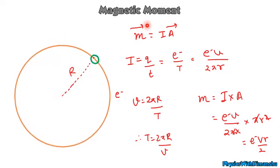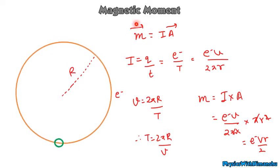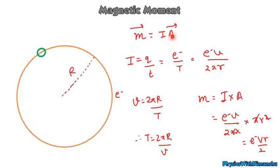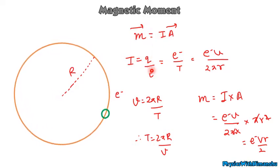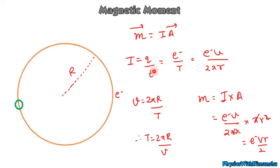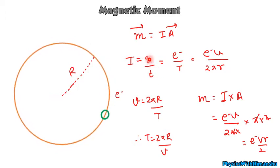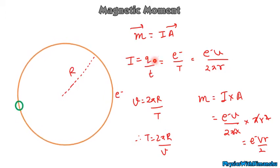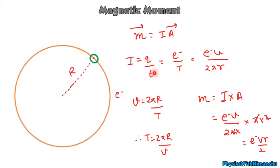Let's find the magnetic moment. Magnetic moment is current times area. Current I equals q/t, where q is charge and t is time taken. Since an electron is rotating, I'll write e for the electron charge.